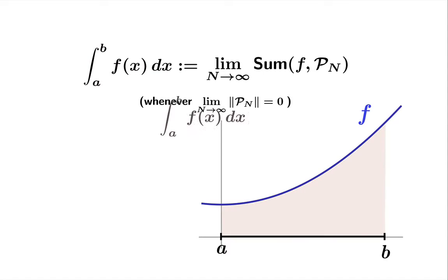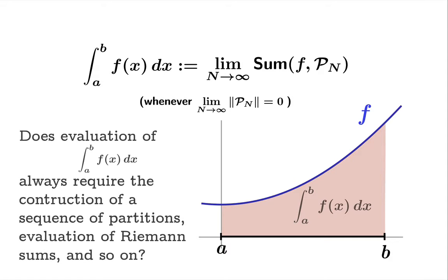We've interpreted the definite integral to give us signed area under the curve. The question we're going to deal with in this video is: does evaluation of the definite integral always require the construction of a sequence of partitions, the evaluation of Riemann sums, and so on? And the answer is decidedly no.